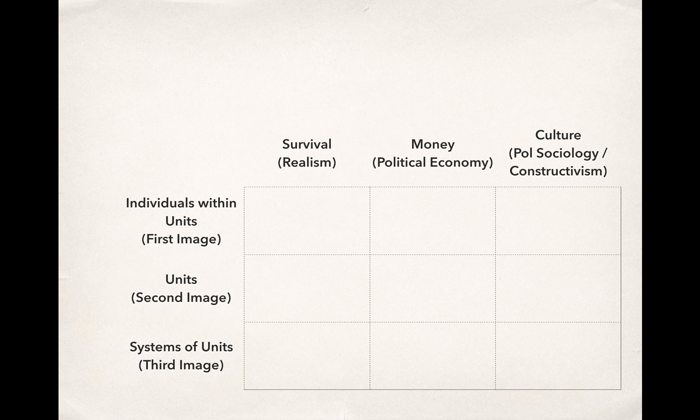Just to review quickly: this is the dimension that tells us what varies. In the first image, elite characteristics vary — this is where we have presidents, dictators, military generals, CEOs of companies, heads of political parties who have particular characteristics. As those characteristics vary, that's the independent variable.